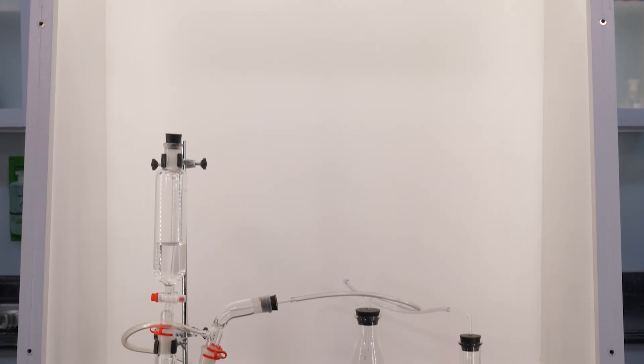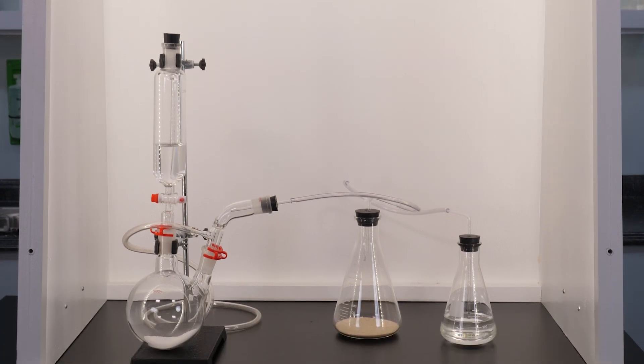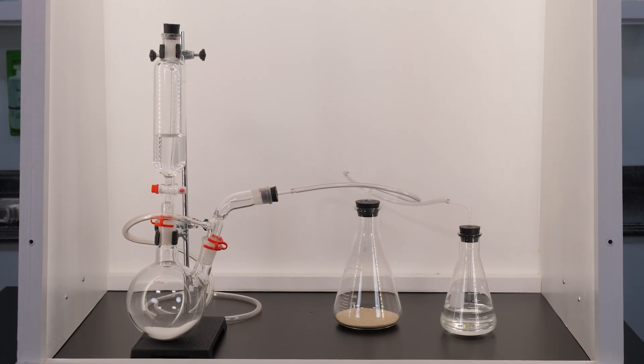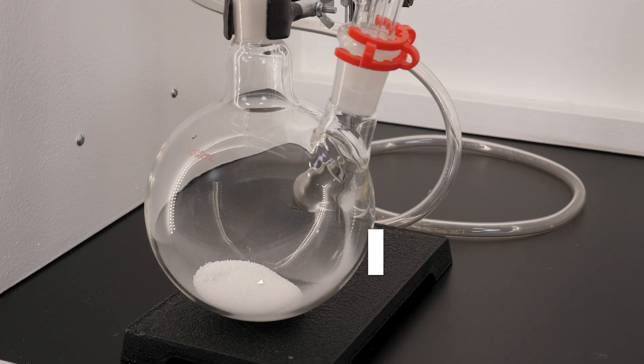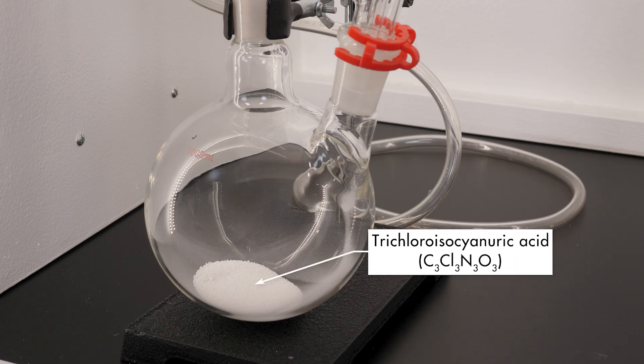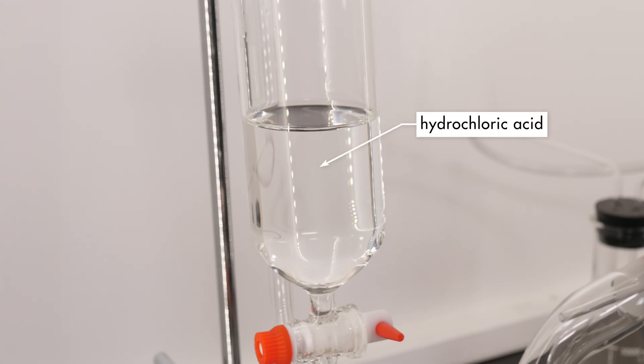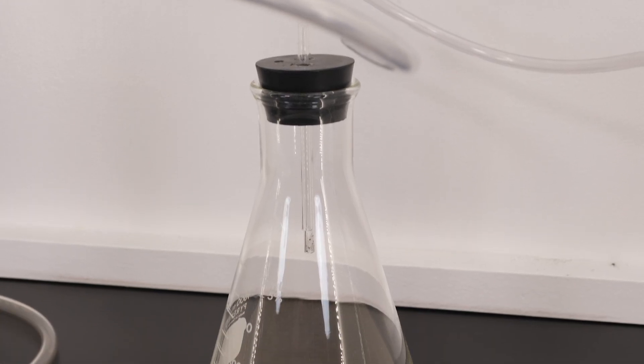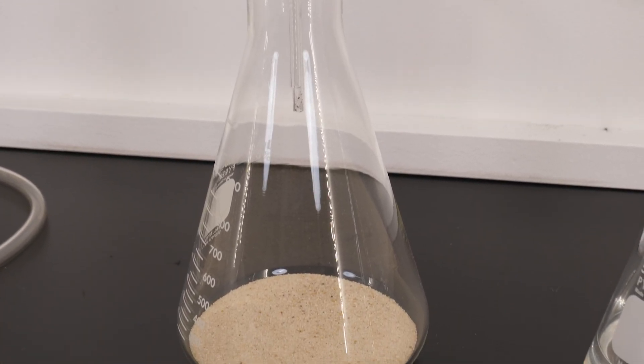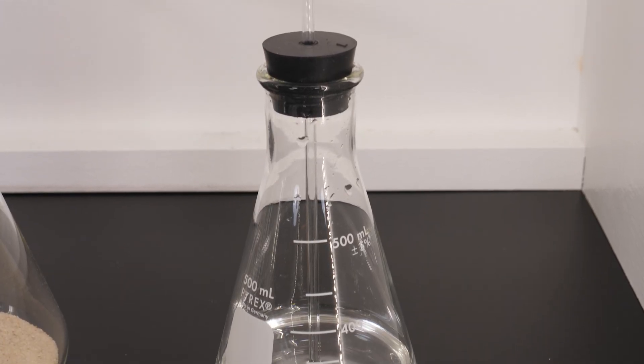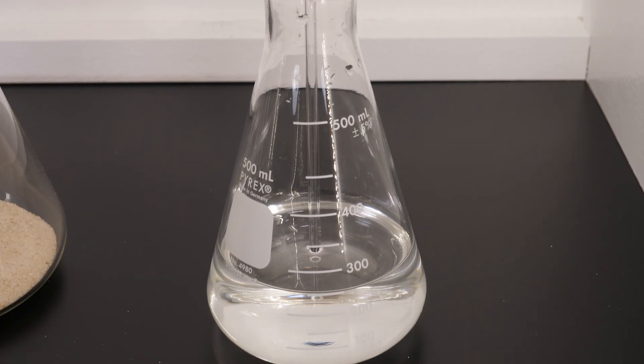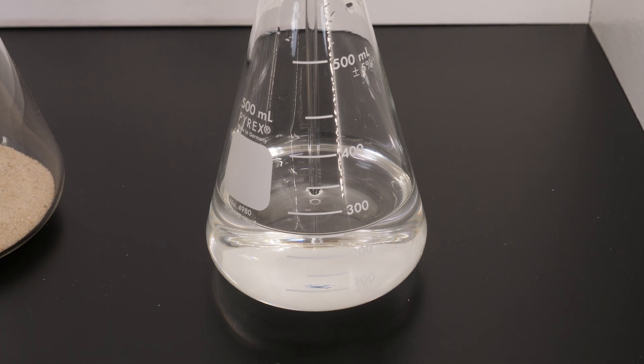Exposure to chlorine gas can cause severe respiratory problems. To generate enough chlorine gas for this reaction, we will use this laboratory setup. In this setup, trichloroisocyanuric acid will react with hydrochloric acid to produce chlorine gas. Chlorine gas will be collected in this flask. Excess chlorine gas will be neutralized with sodium hydroxide in this last flask.